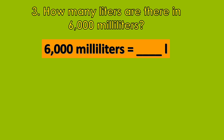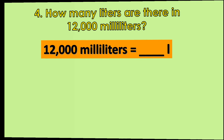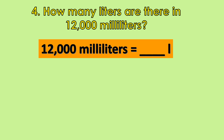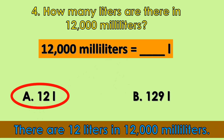How many liters are there in 6,000 milliliters? A. 60 liters. B. 6 liters. Good! There are 6 liters in 6,000 milliliters. How many liters are there in 12,000 milliliters? A. 12 liters. B. 129 liters. Good job! There are 12 liters in 12,000 milliliters. Wonderful!